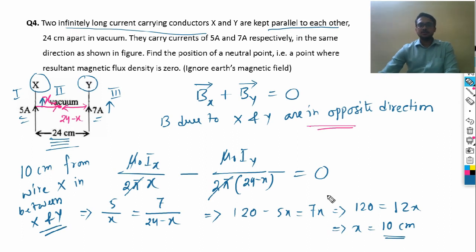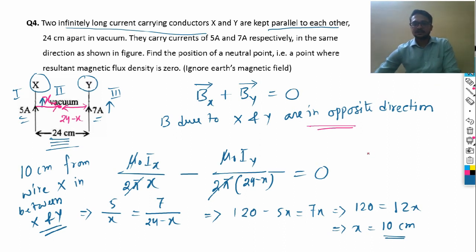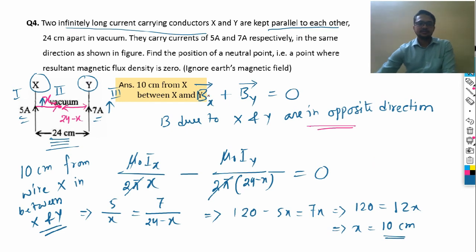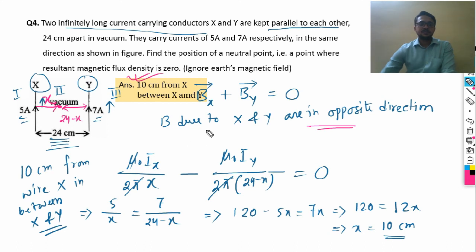So the final answer is: neutral point at 10 centimeters from wire X, between X and Y. That is the correct answer — 10 centimeters from X, between X and Y.